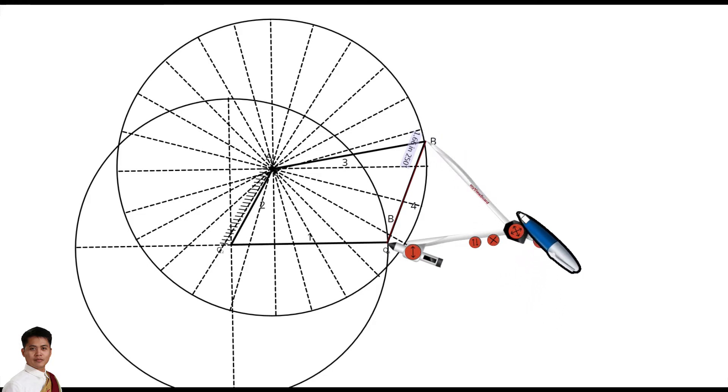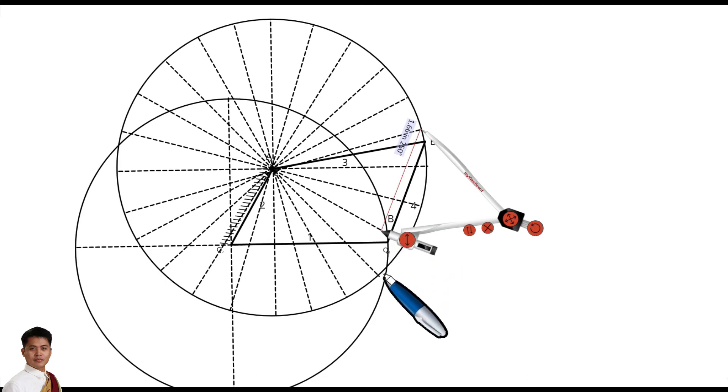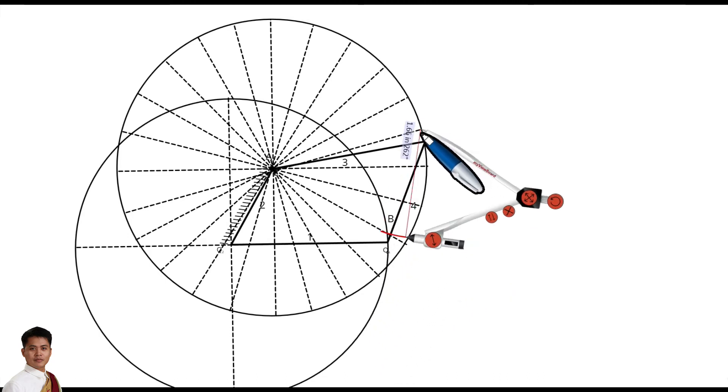So using our compass, let us trace the next position of B or our Q2A. Let us draw an arc that will pass through the path of Q4. And then after that, connect this new point or new position of B to the point of intersection of the arc and the path of Q4.